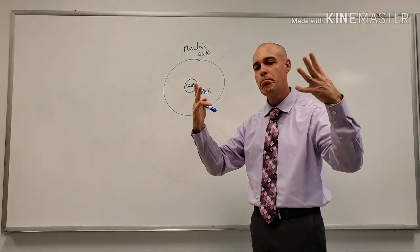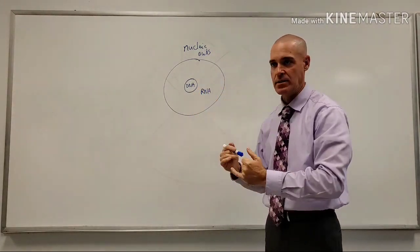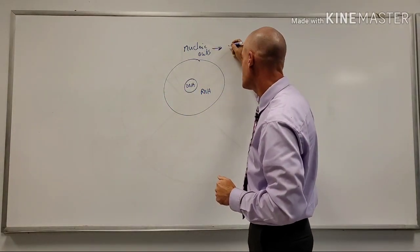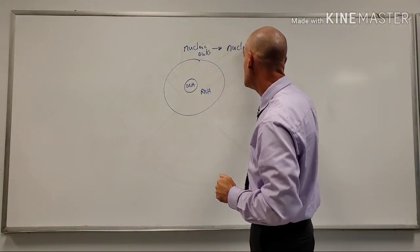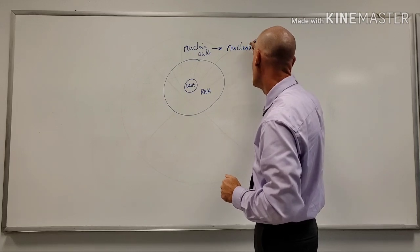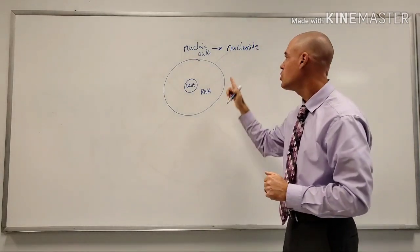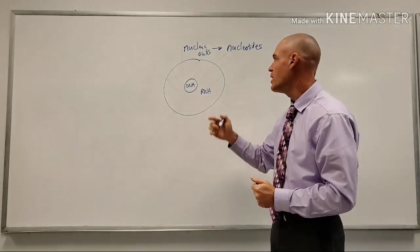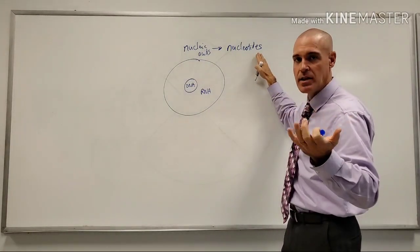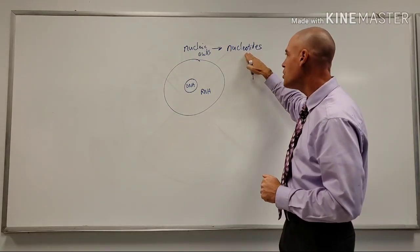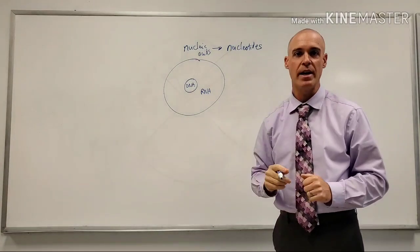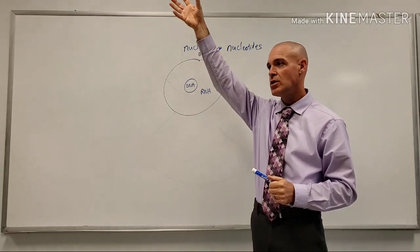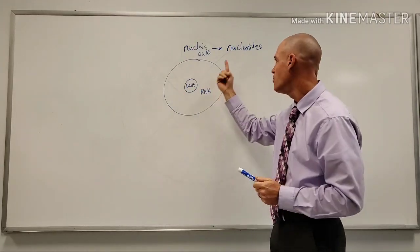And this is the key thing. What are the building blocks of nucleic acids? What are the building blocks of DNA and RNA? Well, the building blocks are going to be the nucleotide. Nucleotides, plural, because there's going to be lots of them. They are the building blocks of nucleic acids, which means when we look at DNA or RNA, we're going to see long chains of nucleotides.